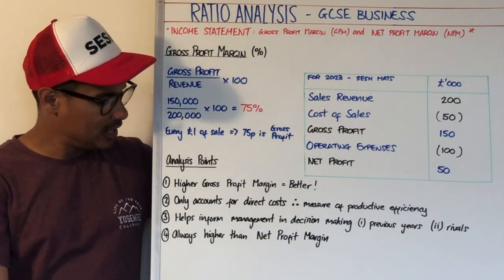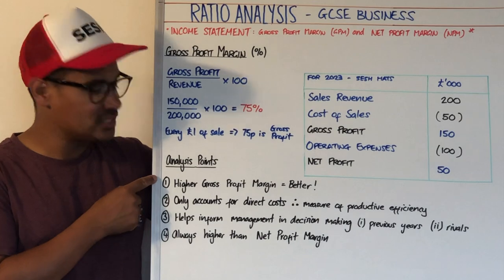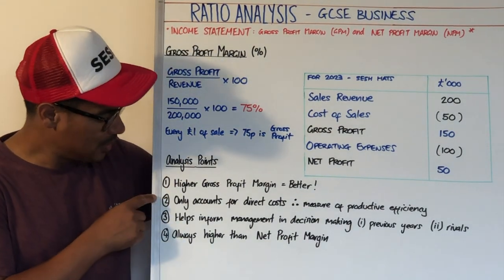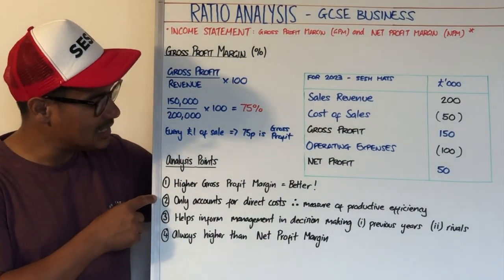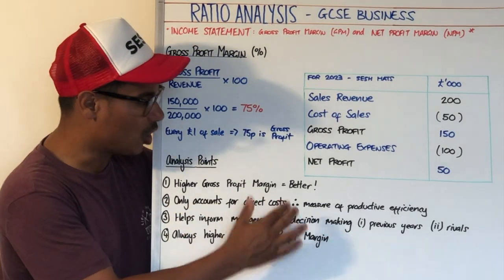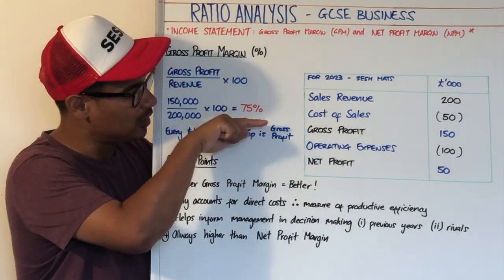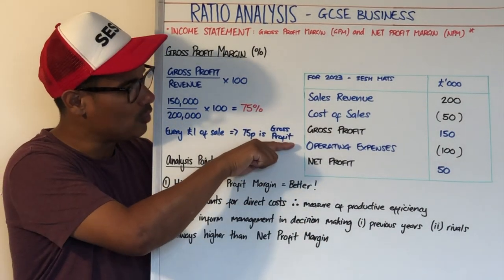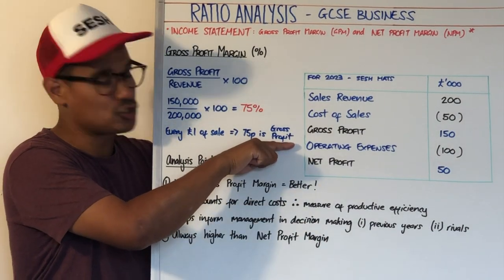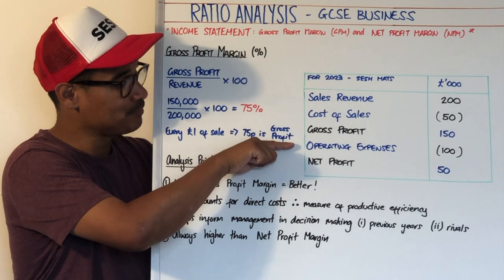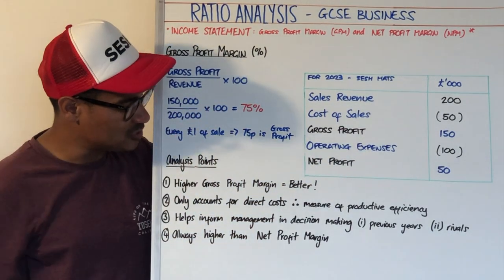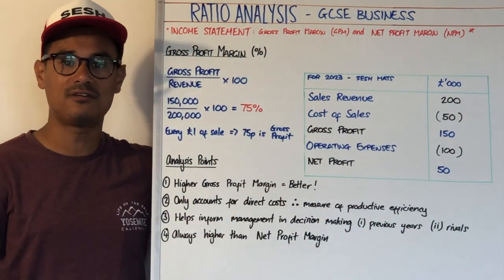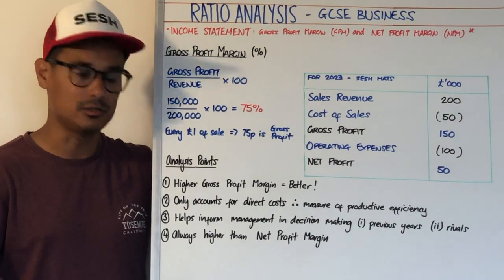Now let's look at analysis points. First, the higher your gross profit margin, the better — you want it to be as high as possible. Number two is that it only accounts for direct costs, because gross profit margin is positioned in the middle of the income statement — it's not accounting for indirect costs or operating expenses. So it's just a measure of productive efficiency — how efficiently you produce.